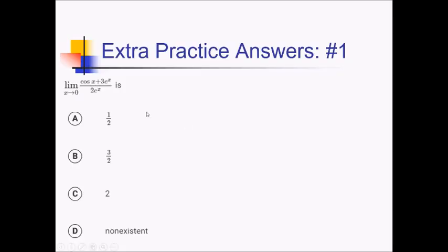On this one, we're trying to find the limit as x approaches 0 of this crazy looking expression. Looking at all these types of functions, we've got cosine, we've got e to the x — those are both continuous functions. We're dividing by 2e to the x, which we know can't have a value of 0. So this is one big continuous function, which means that the limit value and the function value, what I get by just plugging 0 in, are going to be the same thing. So I'm just going to go ahead and plug 0 into this because these functions are safe to do so.